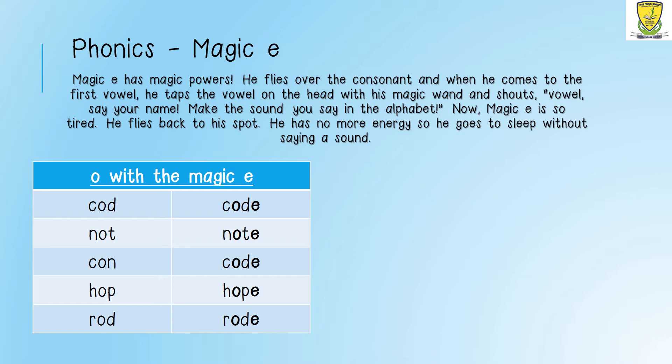The next word is 'con': K-O-N, con. If we add an E at the end, the O becomes an O. So now our word is going to be K-O-N-E, cone.